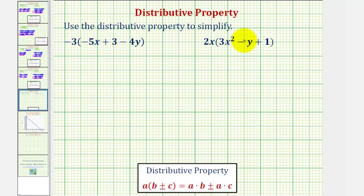We want to use the distributive property to simplify the given expressions. The distributive property is given here below where we have a times the quantity b plus or minus c equals a times b plus or minus a times c.